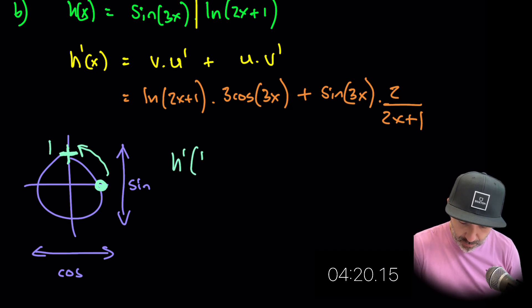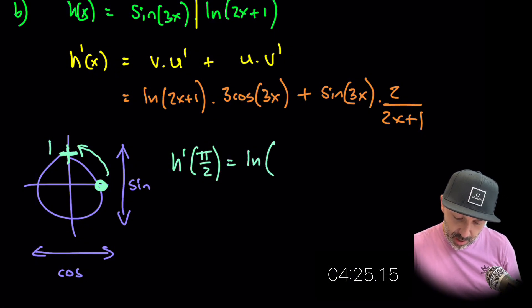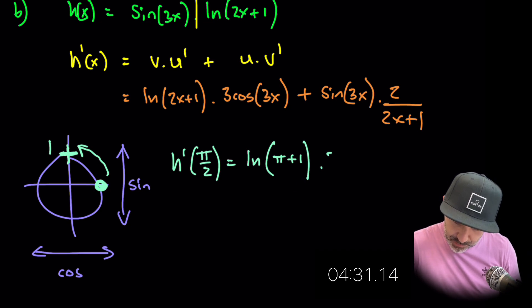So h prime of 90 degrees pi over 2 is natural log pi over 2, that's just pi plus 1, times 3. So I've done this bit. I've done this bit.